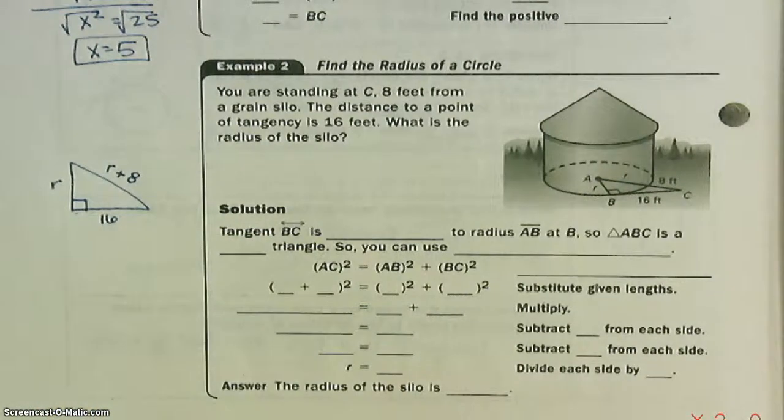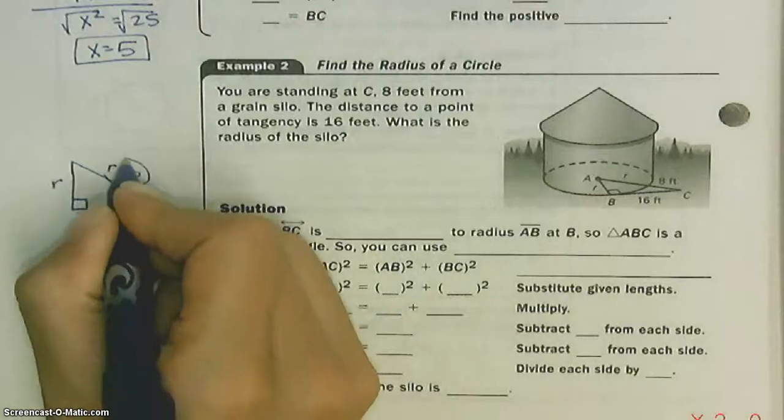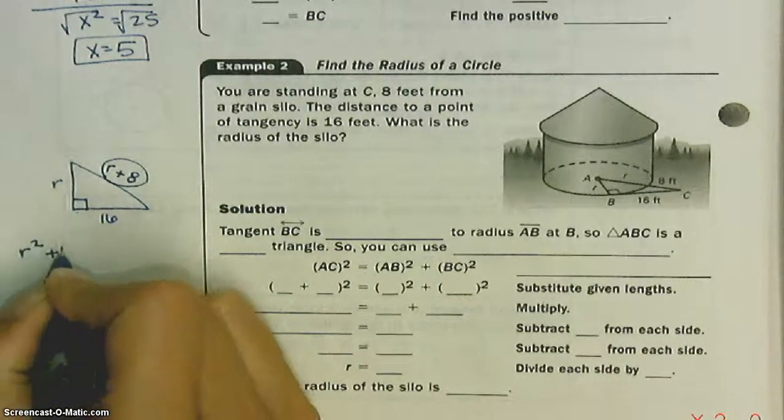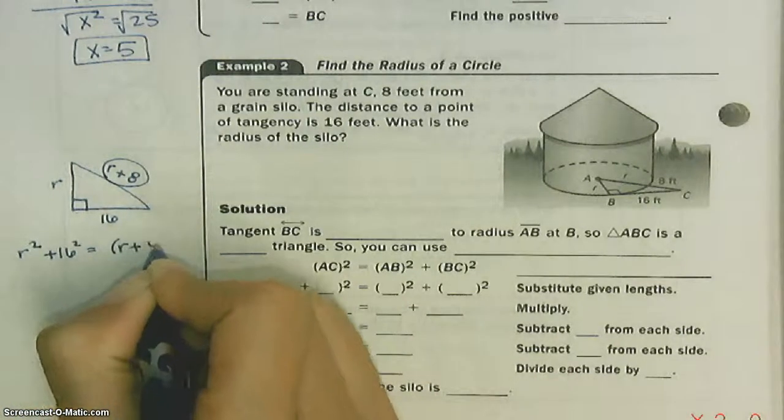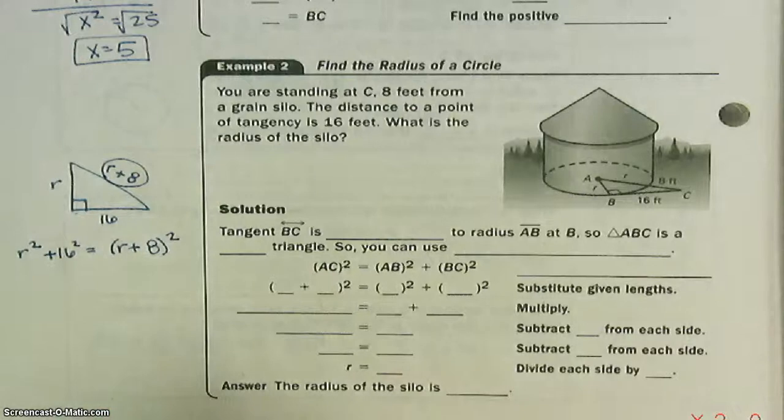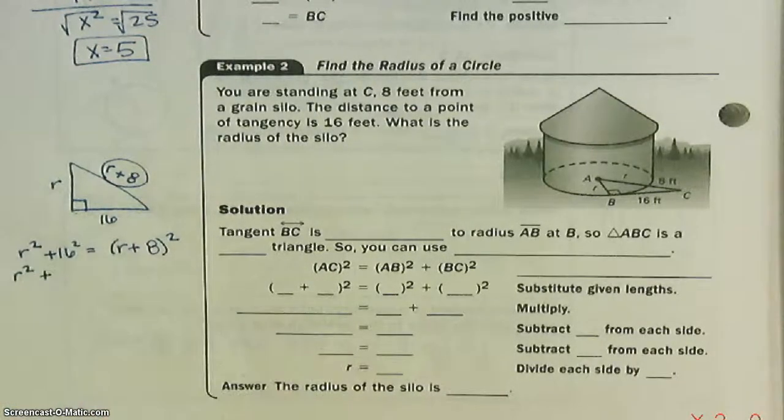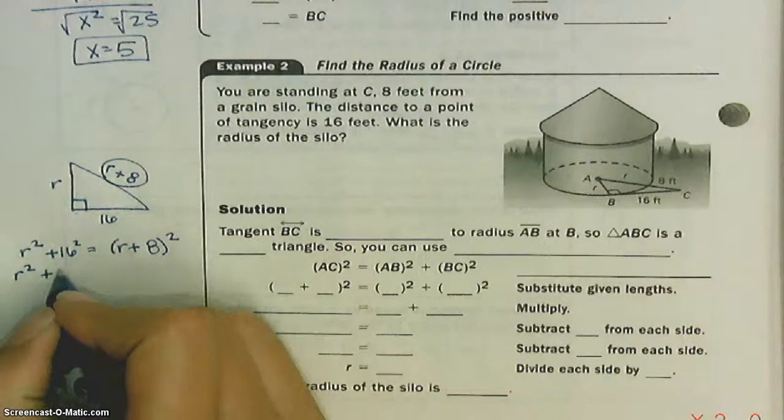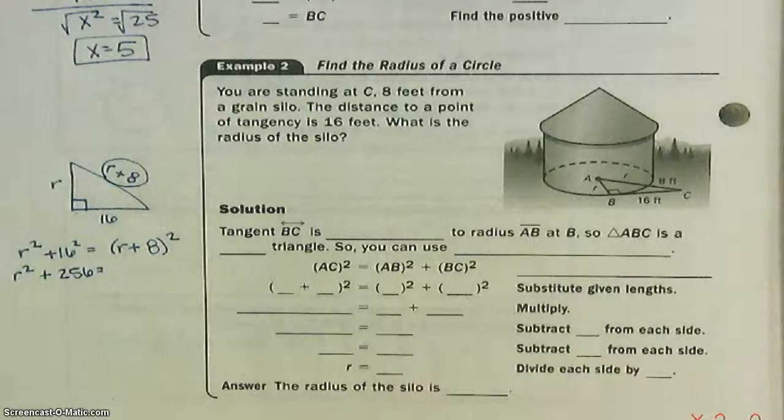Now, we can do the Pythagorean theorem. This is our C value. A squared plus B squared equals C squared. Now, this is a little bit of algebra. We need to review this a little bit. 16 squared, we can put it in our calculator if we don't know. That's 256.